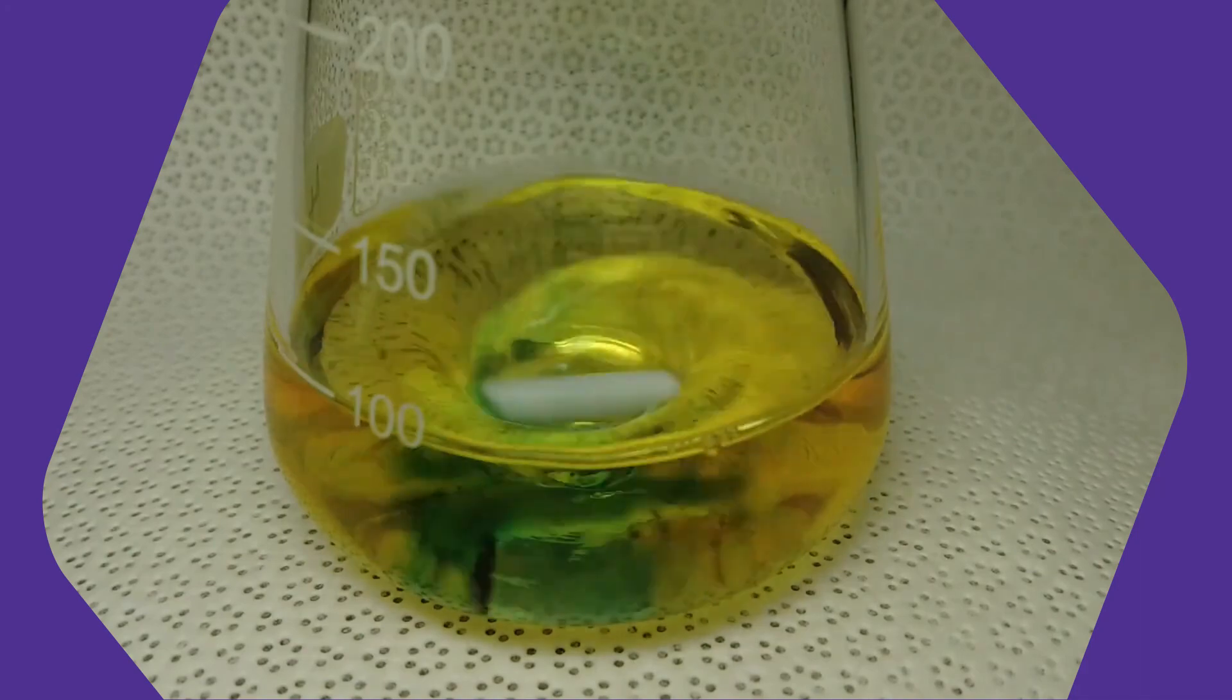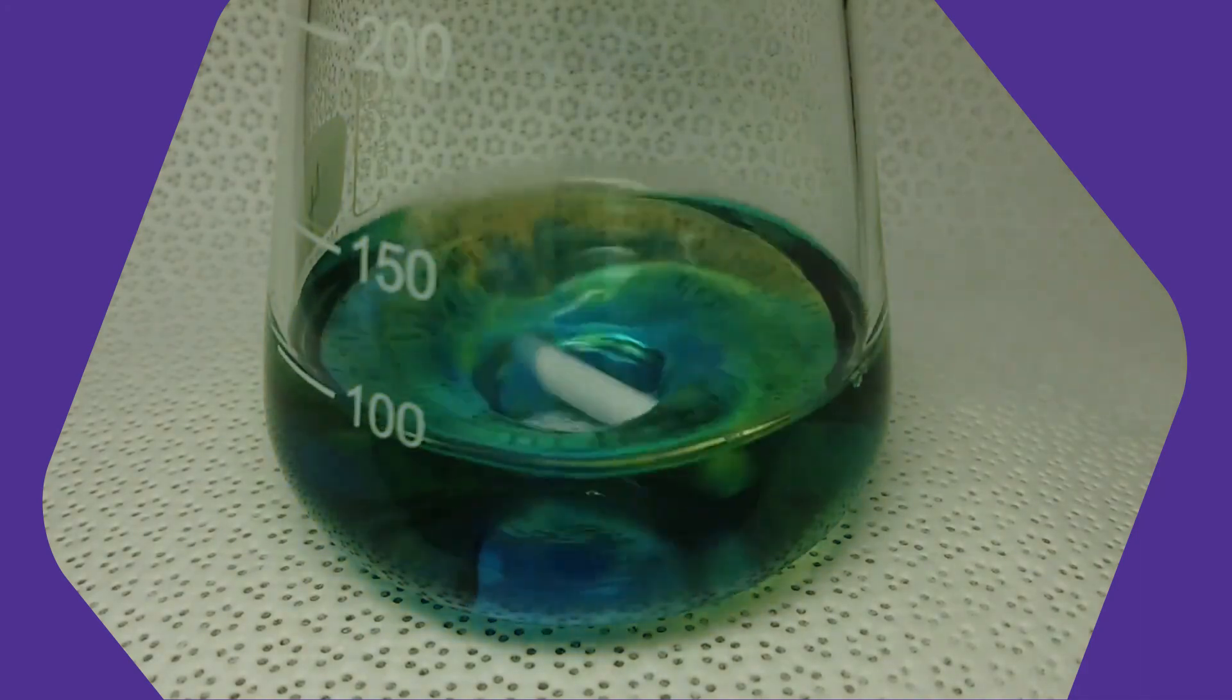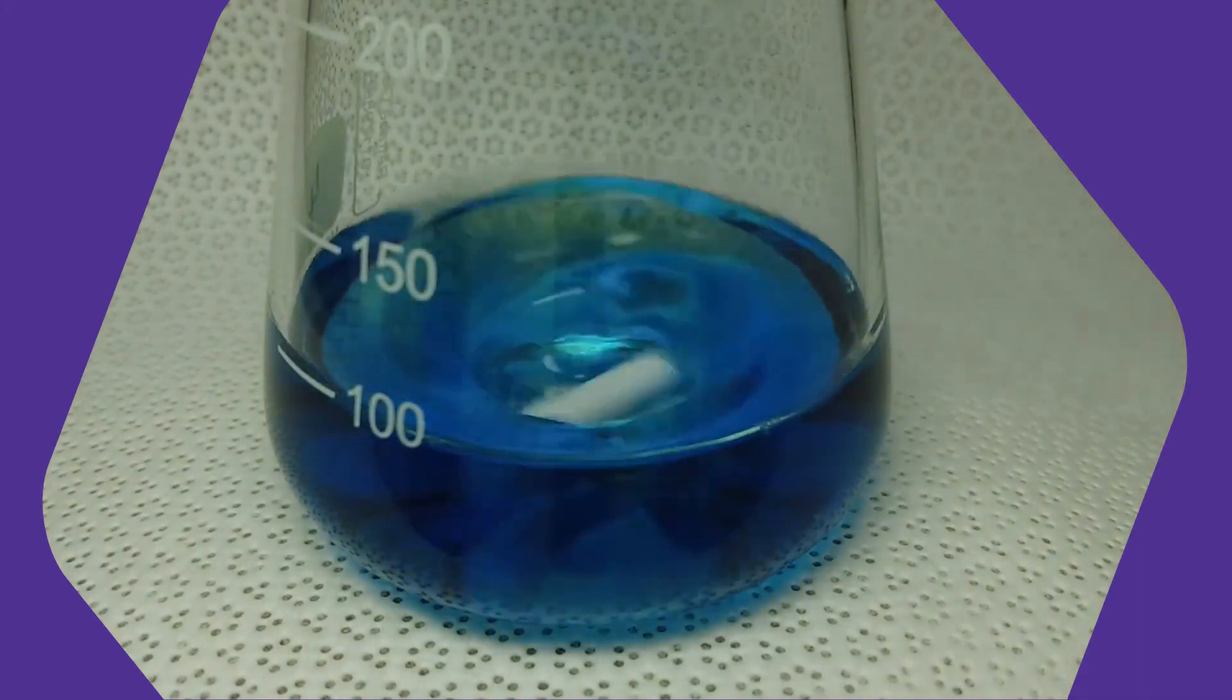A challenge is to exactly determine when the equivalence point is reached. A simple solution can be using an indicator like in our experiment. An indicator is a substance which can change its color depending on the environment. In our case, depending on the pH value. The sodium hydroxide solution has a very high pH value. At the equivalence point, the pH value drops to 7 and the indicator changes in color.